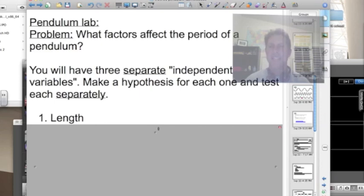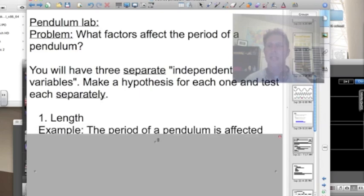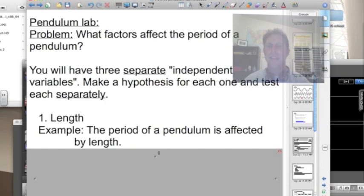Hypothesis. I'll do this as an example and you can do the other two on your own. So for example, your hypothesis may state the period of a pendulum is affected by length. That is a testable statement. How we test that statement?